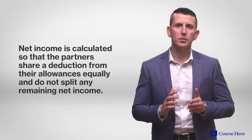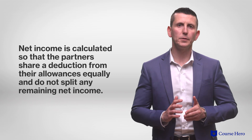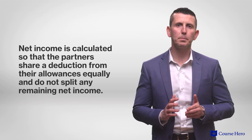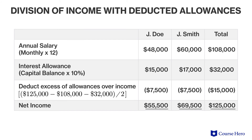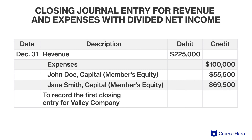What if the amount of the allowances exceeds the amount of net income available? In that case, net income would be calculated so that the partners will share a deduction from their allowances equally and will not split any remaining net income. Suppose that the total amount of allowances exceeds the partnership's net income of $125,000. The division of income then includes shared deducted allowances, and we will have a closing entry for revenue and expenses as well as for dividing the net income.